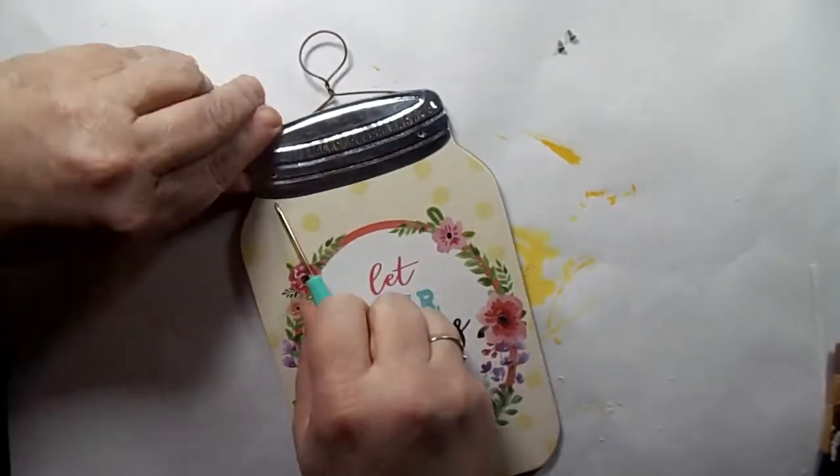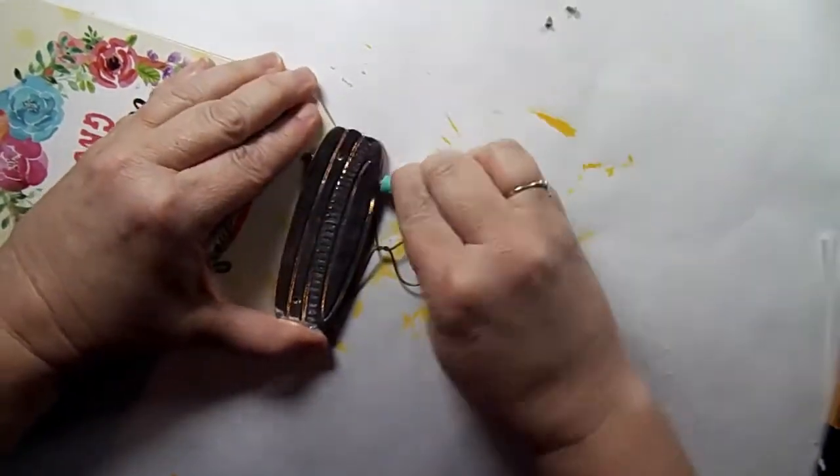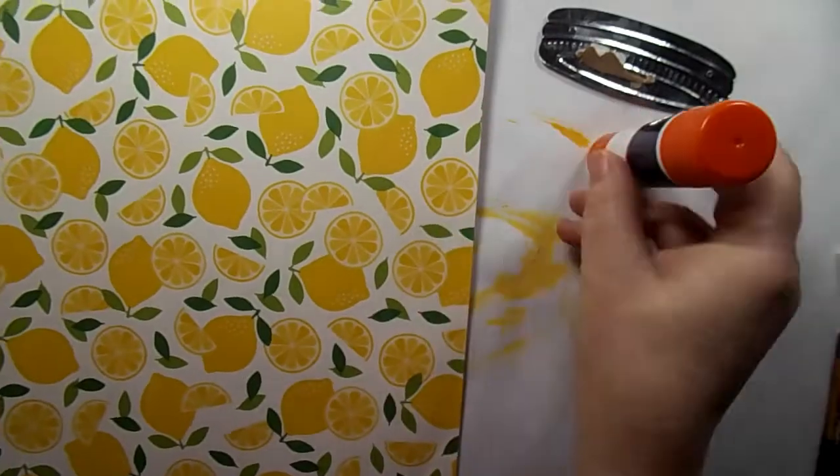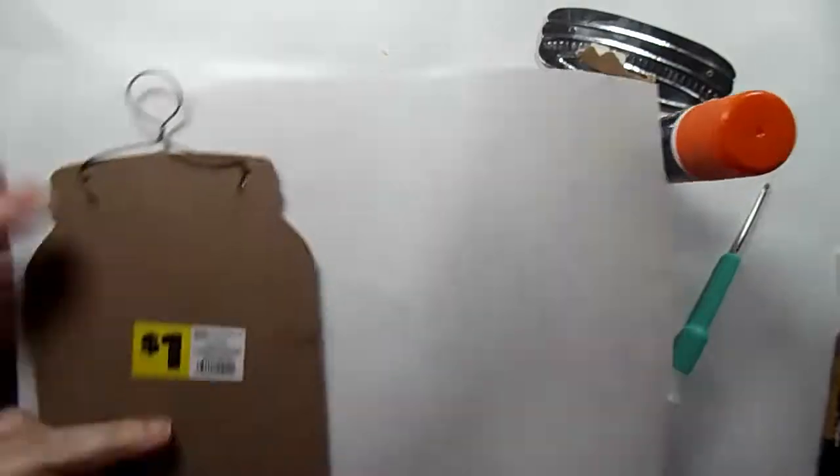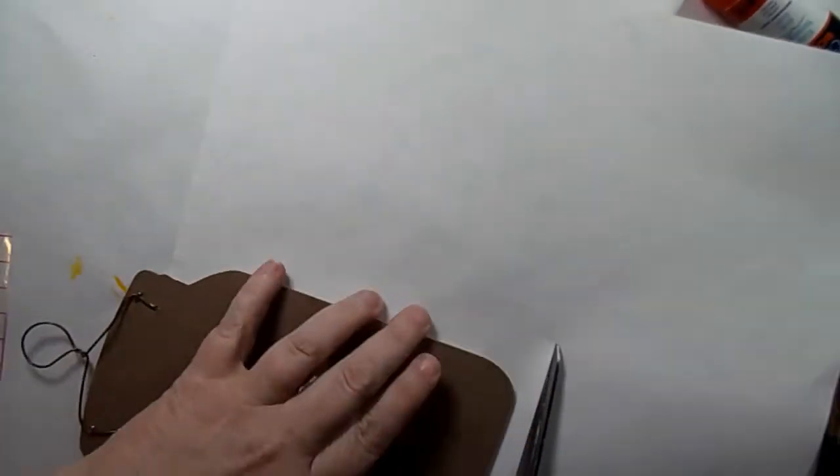I found this jar at Dollar General and I'm just going to take this lid off. First I took out the two screws, now I'm just pulling that off. This scrapbook paper I found at Joann's, and so I just measured it and cut it out quick.